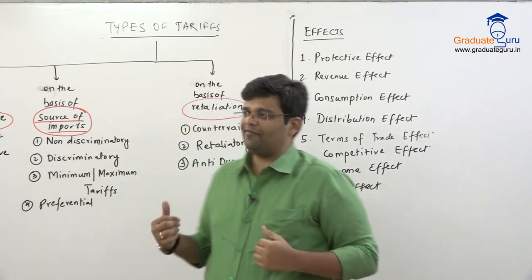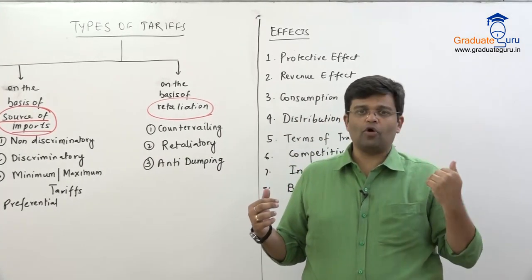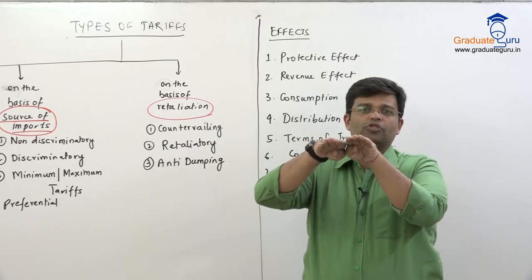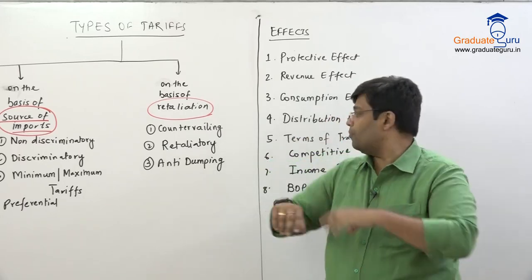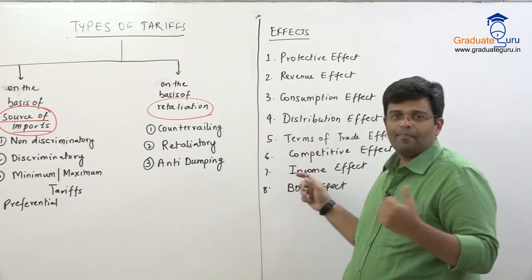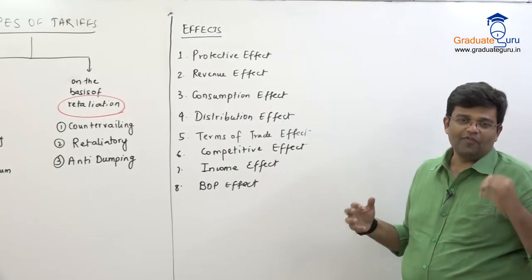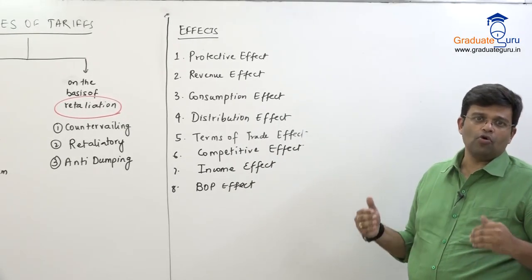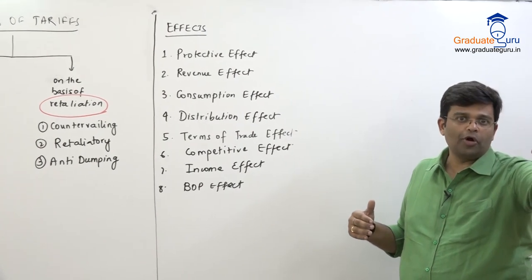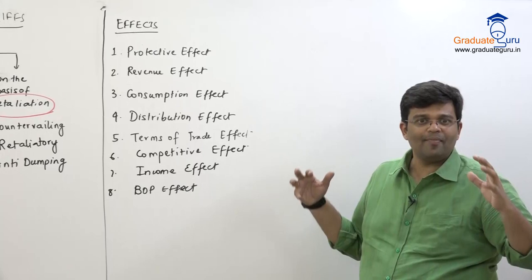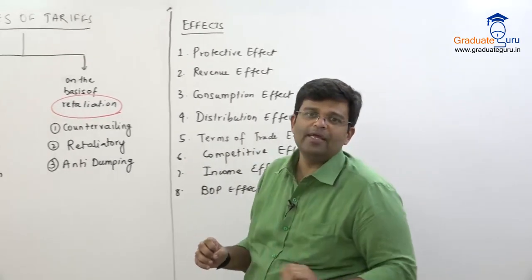Sixth is the competitive effect: when tariffs are imposed, imports become costlier and become equal in price to domestic goods, so they are now competitive. Seventh is the income effect: local people's income increases and local employment increases, because demand for local goods rises as imported goods become more expensive due to tariffs. Eighth is the balance of payments effect: if imports are slowed or stopped, the outflow of foreign currency also stops or reduces, so foreign exchange is maintained and the balance of payments becomes stable.